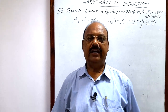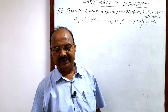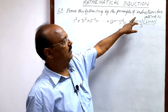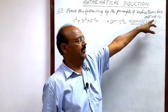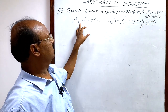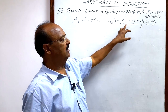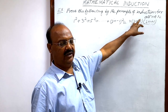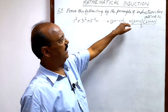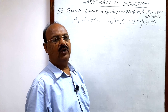Here we will see a very interesting and important question from the topic principle of mathematical induction. The question is: prove the following by the principle of induction for all n belonging to capital N, the set of natural numbers. The statement is 1² + 3² + 5² + ... + (2n−1)² = n(2n−1)(2n+1)/3. This is the mathematical statement, denoted by the symbol Pn.